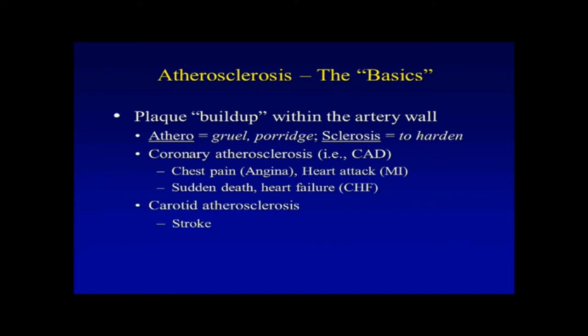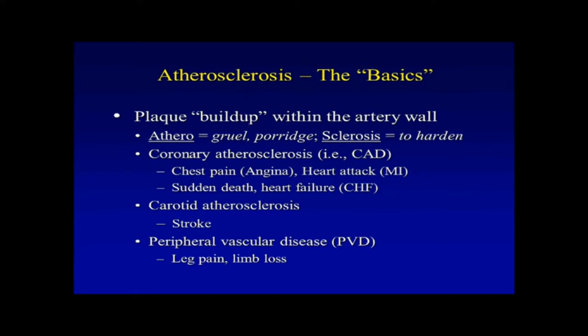You can get atherosclerosis in the carotid arteries, making it a major risk factor for stroke. And if you have involvement of peripheral vessels, primarily the leg vessels, people develop symptoms of leg pain similar to chest pain for the coronaries, and you can have ischemia or limb loss due to peripheral vascular disease, or PVD.